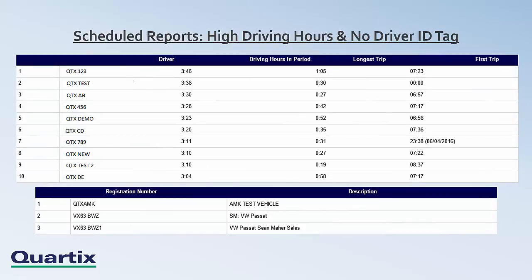Next is the high driving hours report. This report displays three pieces of information: the total driving hours of all vehicles over a specified period of time, the longest trip made during that time without a break, and the time the first trip started. In the example, the report displays all trips over a 24-hour period which exceeded one hour, listed in descending order with the largest driving hour period at the top. The longest trip and first trip columns give additional information to help evaluate the safety of your driver's schedule. Monitoring trip length without break is very important for driver safety as part of employer duty of care — this report is a useful tool to keep a check on driver activity.